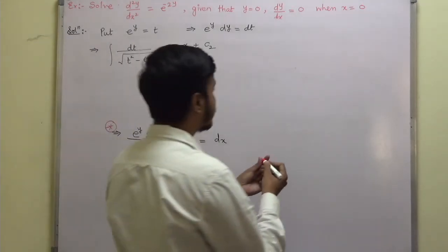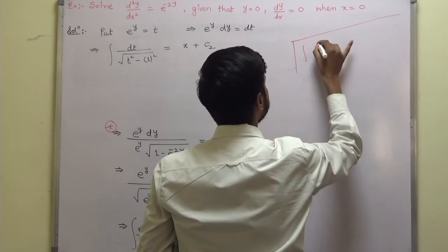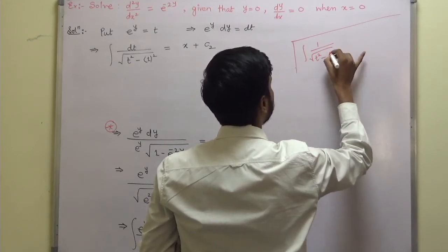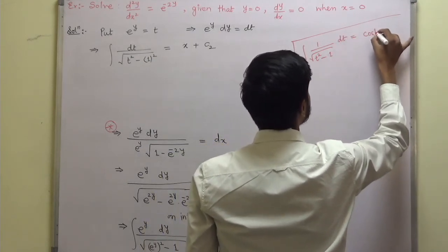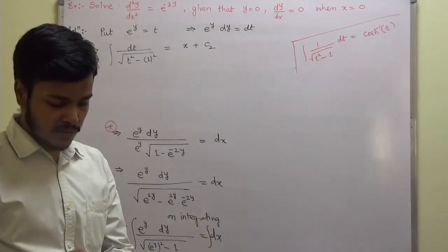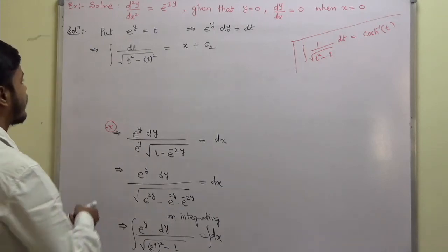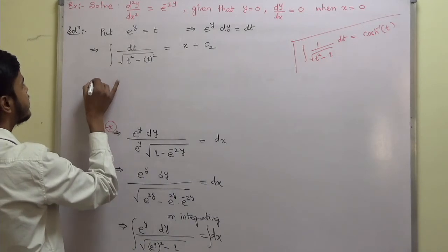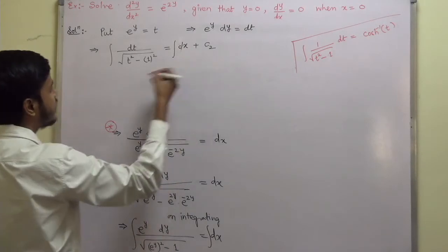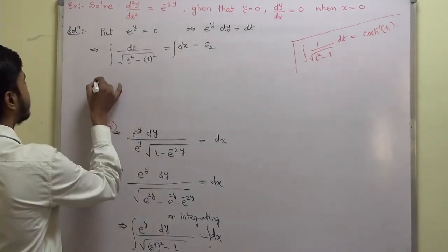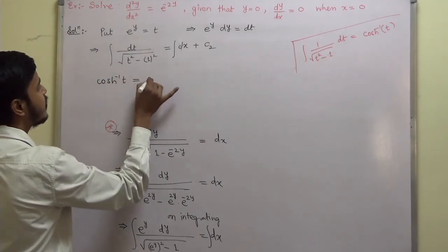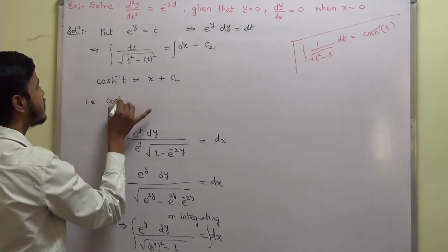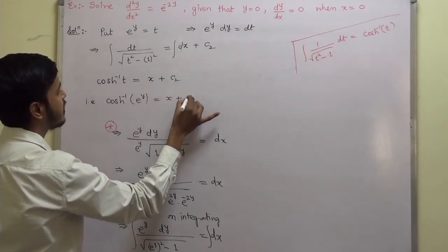I would like you to recollect the formula: ∫ dt / √(t² − 1) = cosh⁻¹(t). Using this result, the integration gives cosh⁻¹(t) = x + c₂. Since t = e^y, this is cosh⁻¹(e^y) = x + c₂. Call this equation number 2.